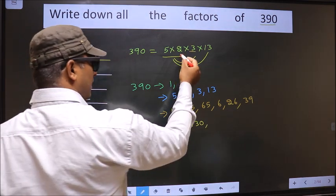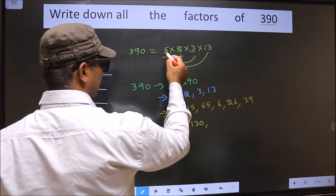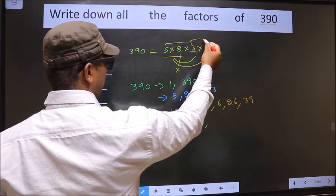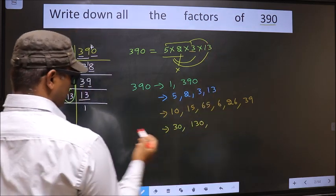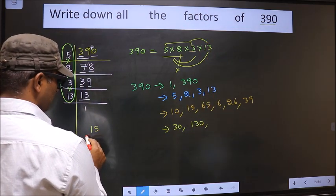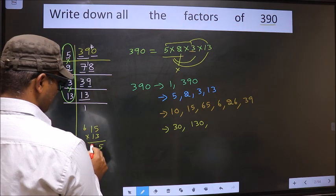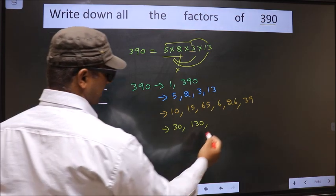Now I leave 2. Take these 2 numbers. 5 into 3, 15. Combine with 13. So 15 into 13. How much do we get? 13, 5, 65. 13, 1, 13. We get 195.